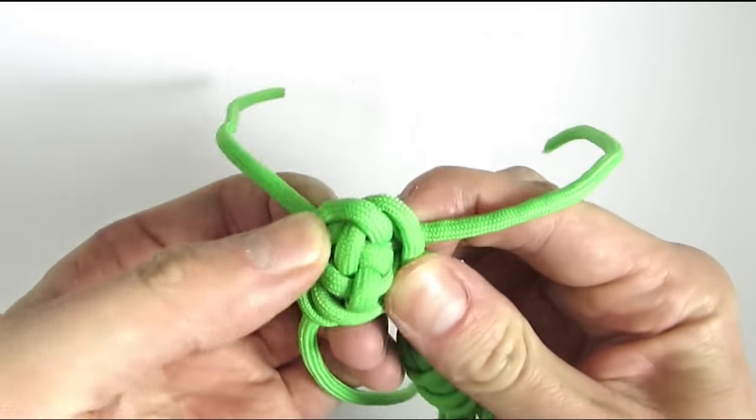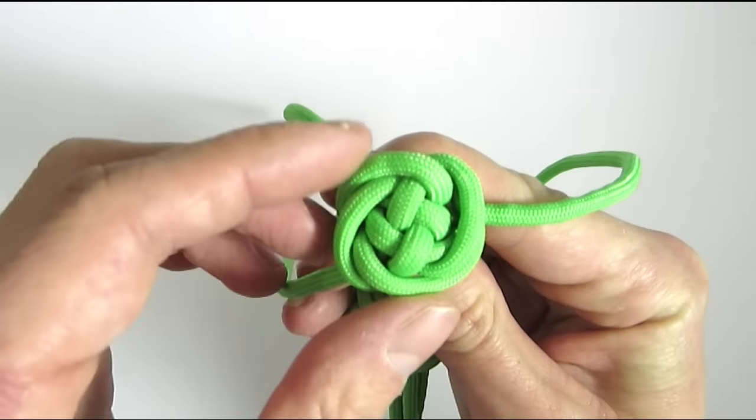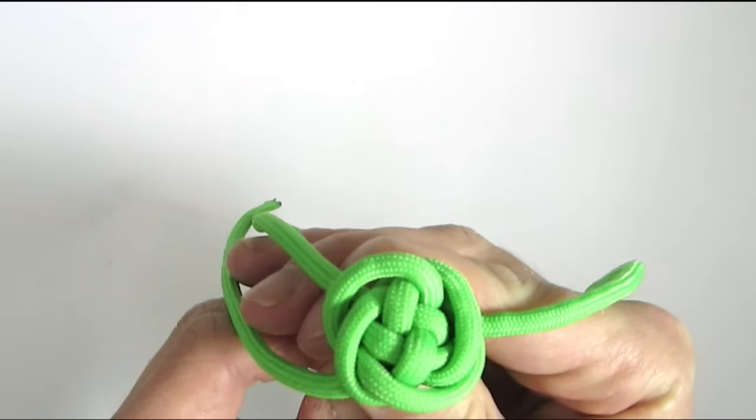So if I pull on the short strands I'm going to shape the crown knot. And with my long strands on the bottom, if I pull on those, the Matthew Walker is going to tighten up.